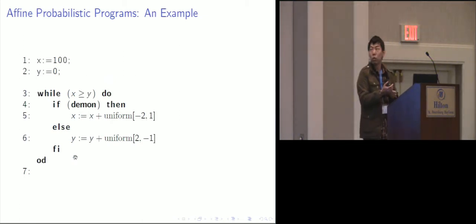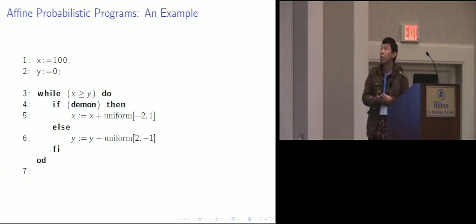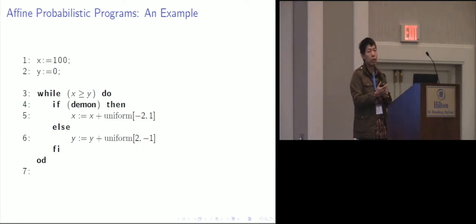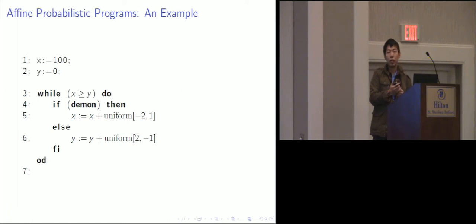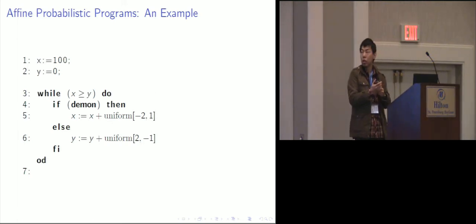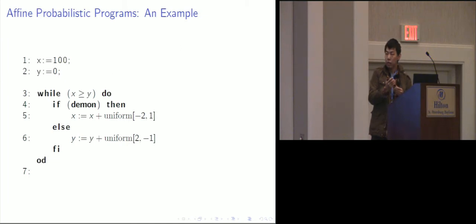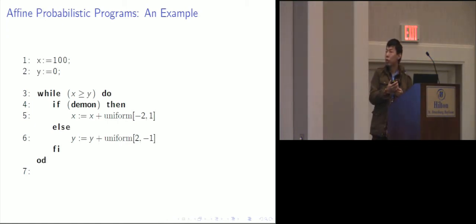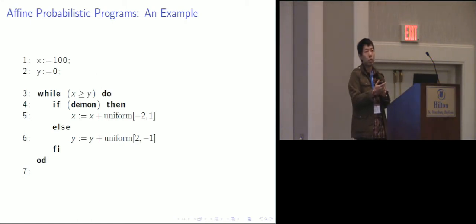Let's look at a simple example. First we assign x to 100 and y to 0, then we enter a while loop where the guard is x is greater than or equal to y. In the loop body, there is a demonic branch, which means that this branch is controlled by some very bad environment. Within this demonic branch, every branch is possible. The first branch increments variable x by a value sampled from some uniform distribution, and we also increment variable y by some uniform distribution.